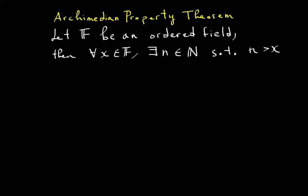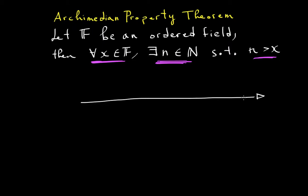Before I prove this, let me show you what this means. This basically says that you can choose any x in the field, and I will give you a natural number that will be greater than the number that you chose. So if this is a real number line, then you can choose any x, I will find a natural n which will be greater than x. Let's do some examples.